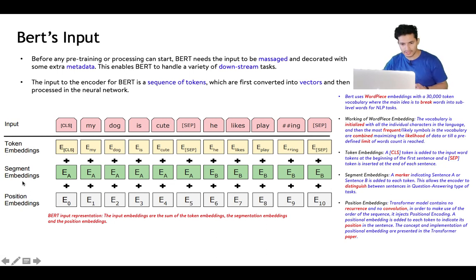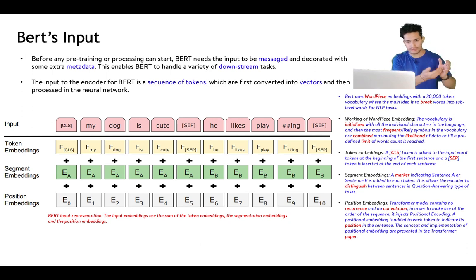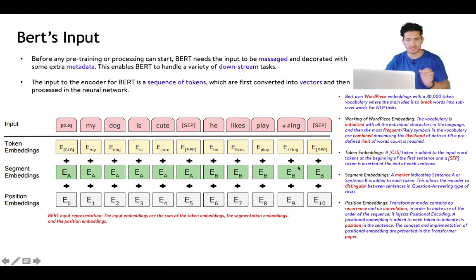The segment embedding is a binary representation — zero or one — denoting whether we are talking about sentence A or sentence B. In some fine-tuning tasks you may not need two sentences and can avoid the second one, but pre-training requires both.